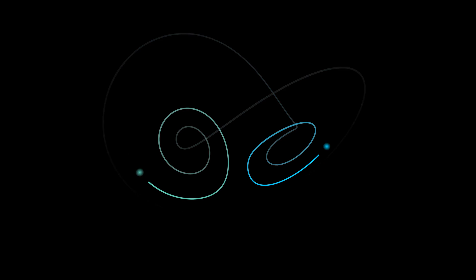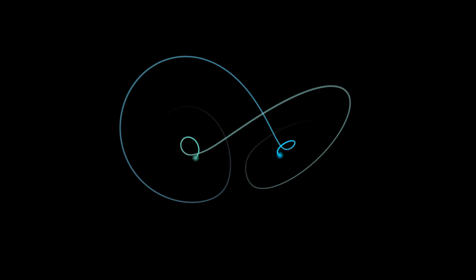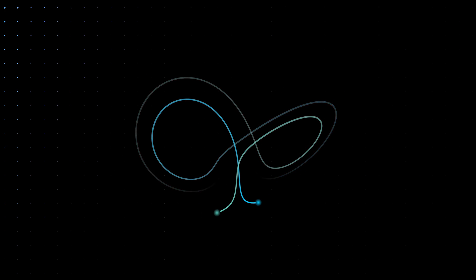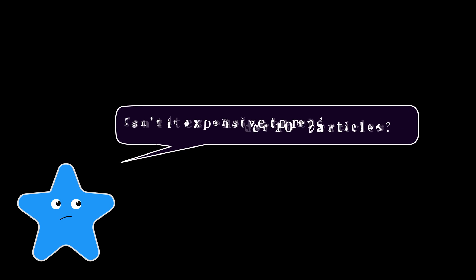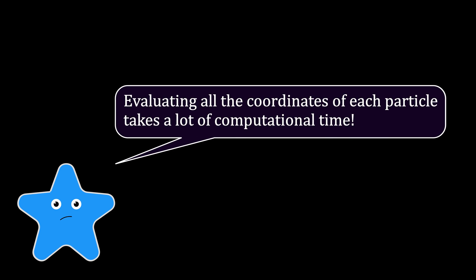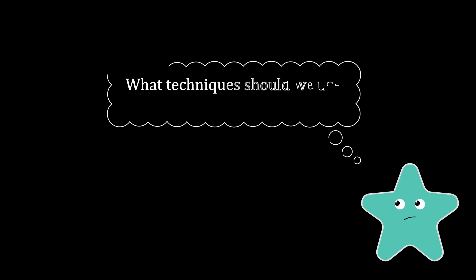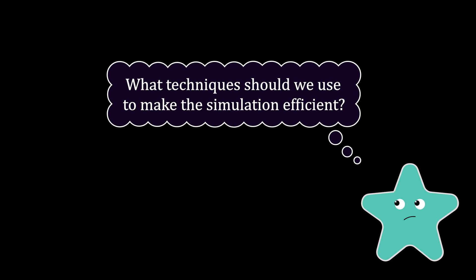But what if we need to observe the effect on a large scale, say a million particles? But simulating a million particles comes with a lot of computational power and not to mention the seemingly endless hours required to render such a simulation. This brings us a critical challenge. How can we optimize our code in order to minimize the execution time without sacrificing the accuracy of the simulation?